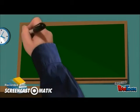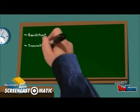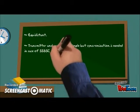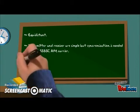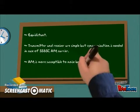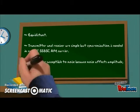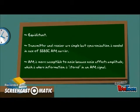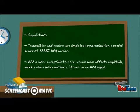For AM modulation, zero crossing in the modulated signal is equidistant. Transmitter and receiver are simple, but synchronization is needed in the case of SSBSC AM carrier. AM is more susceptible to noise because the noise effect affects amplitude, which is where information is stored in the AM signal.